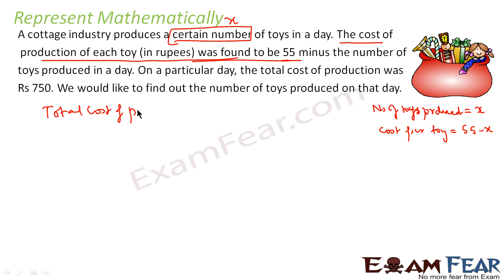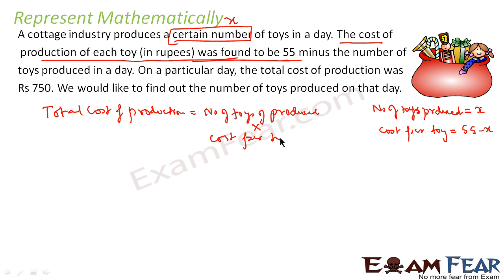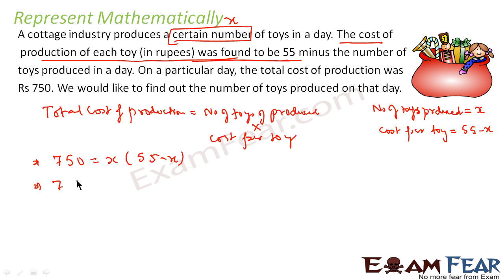The total cost of production equals number of toys produced multiplied by cost per toy. For example, if you have 5 toys and charge 10 rupees each, the total is 50 rupees. Similarly here, total cost = x × (55 - x). The question tells us the total cost is 750, so: 750 = x(55 - x), which gives 750 = 55x - x².